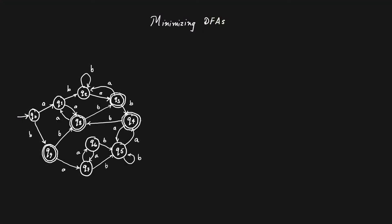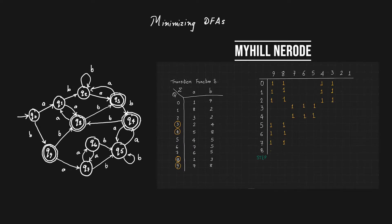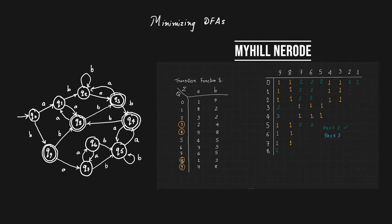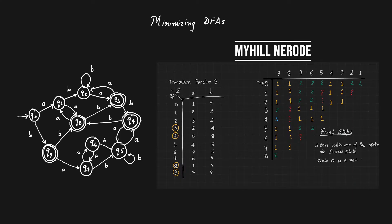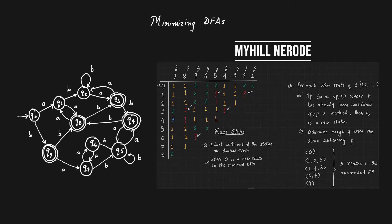In the last video we looked at the Myhill-Nerode method for minimizing DFAs, where we drew a table and filled up the pairs of states that were distinguishable from each other, and then constructed the minimal DFA. That algorithm is quite intricate, and for those looking for something quicker, here is a faster way to minimize a DFA.